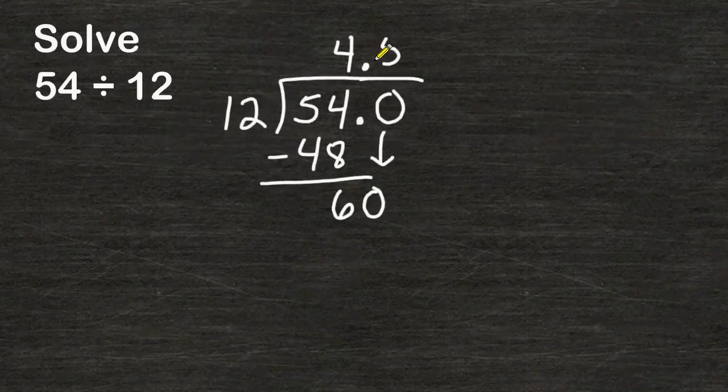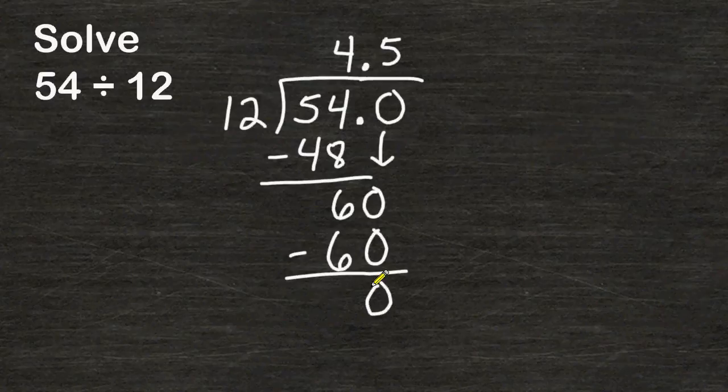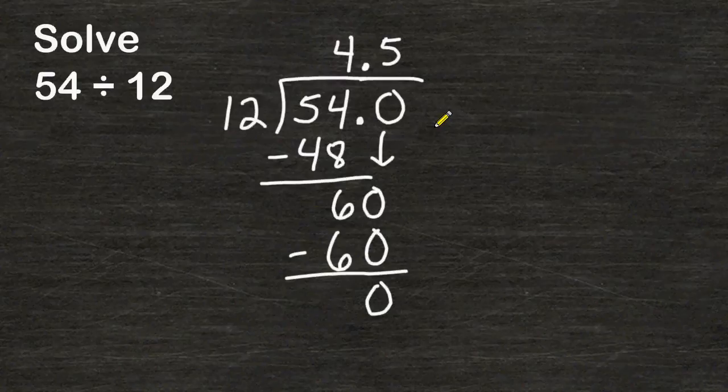And 12 can be divided into 60 five times. And 5 times 12 is exactly 60. So 54 divided by 12 is equal to 4 and 5 tenths or 4 and a half if you were to express it as a fraction.